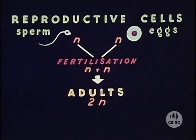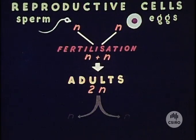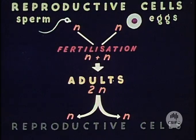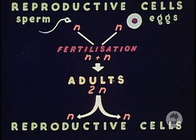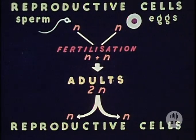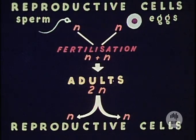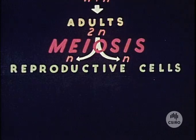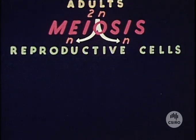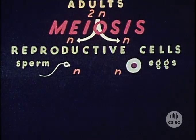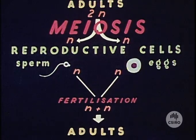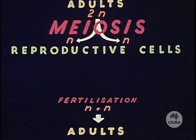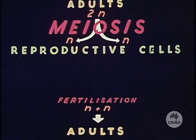In animals, the halving of this 2n adult chromosome number before the formation of reproductive cells is brought about by a special type of cell division called meiosis. Plant reproduction is essentially the same as animal, but in some plants the life cycle is more complex and meiosis may not result in the direct formation of gametes.